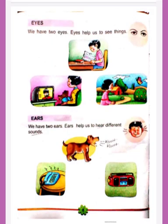Now we will know about eyes. We have two eyes. Eyes help us to see things. You can see colors and different pictures with your eyes. We see with our eyes.